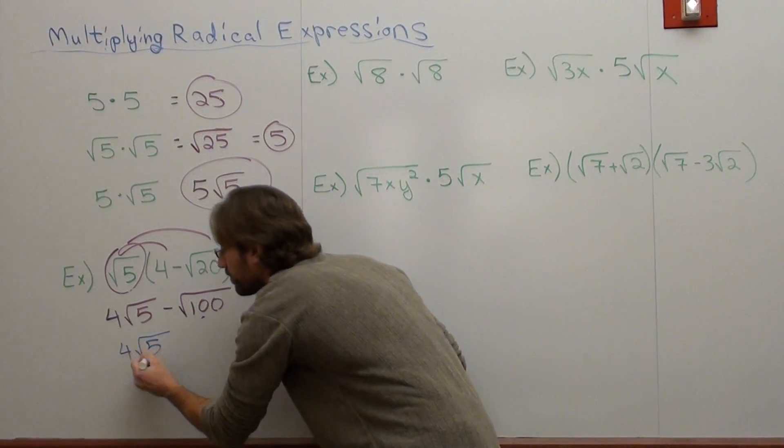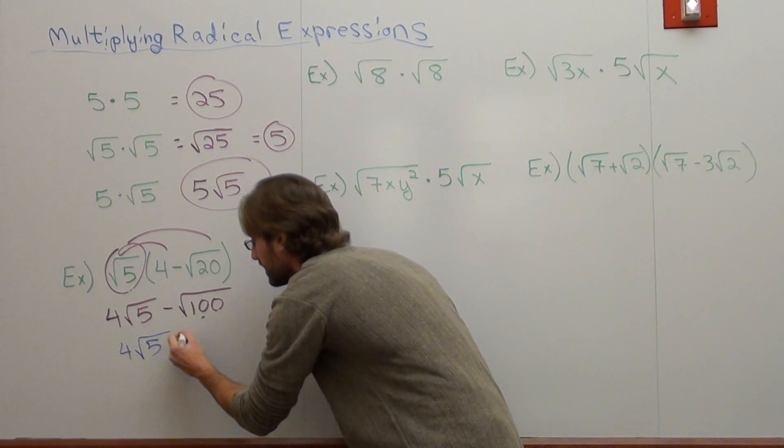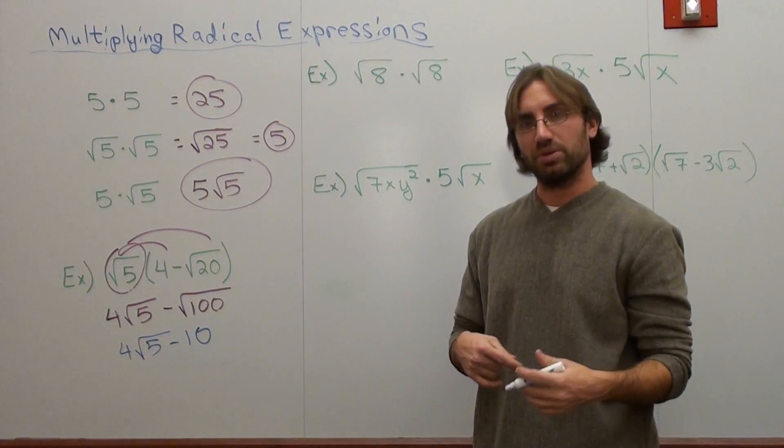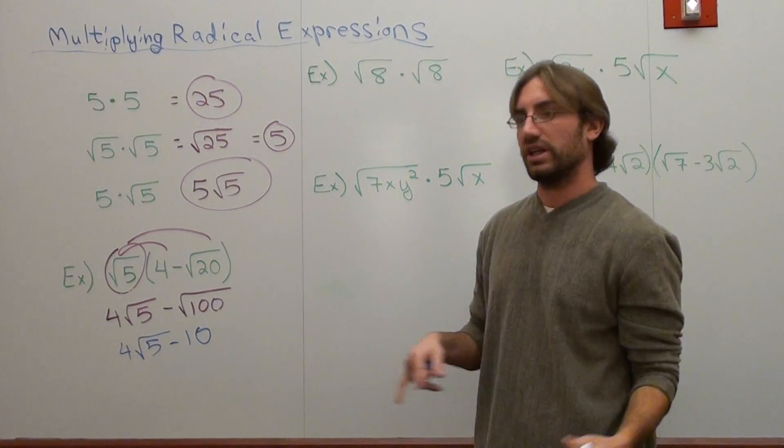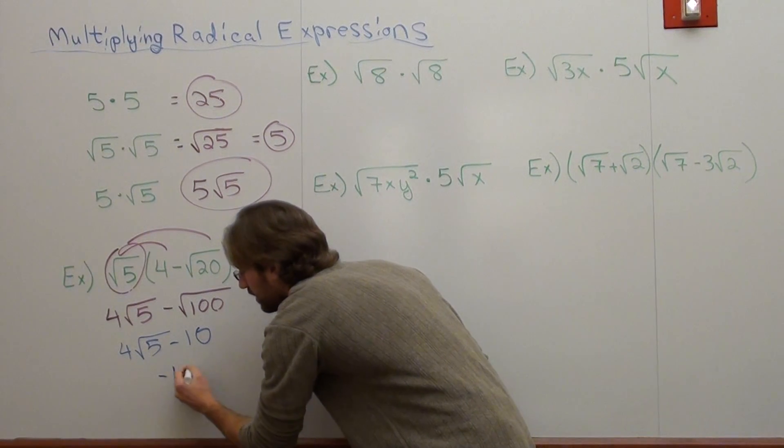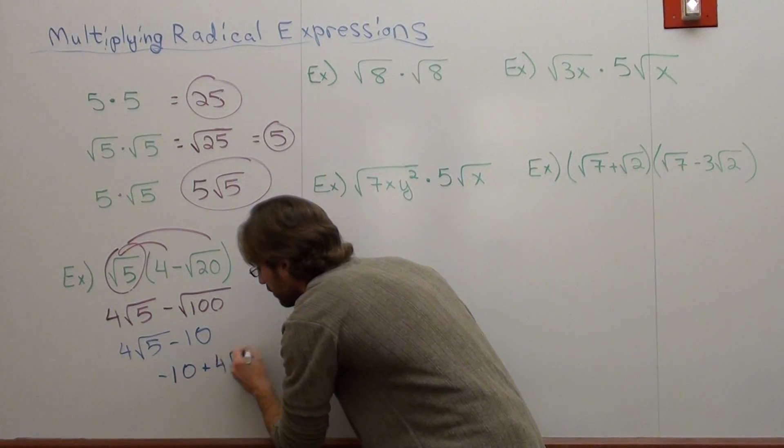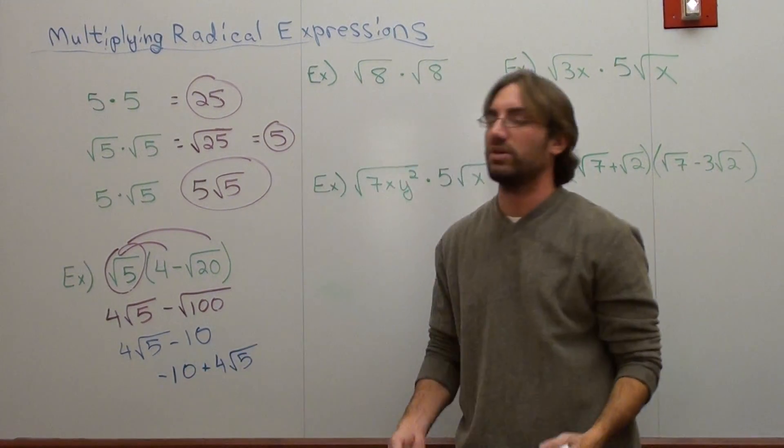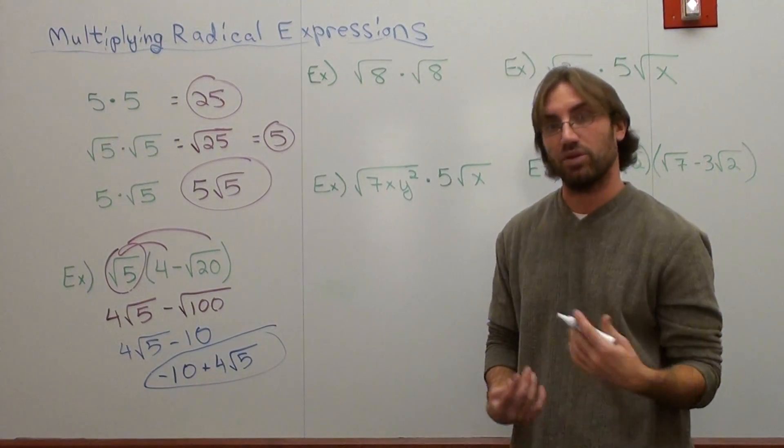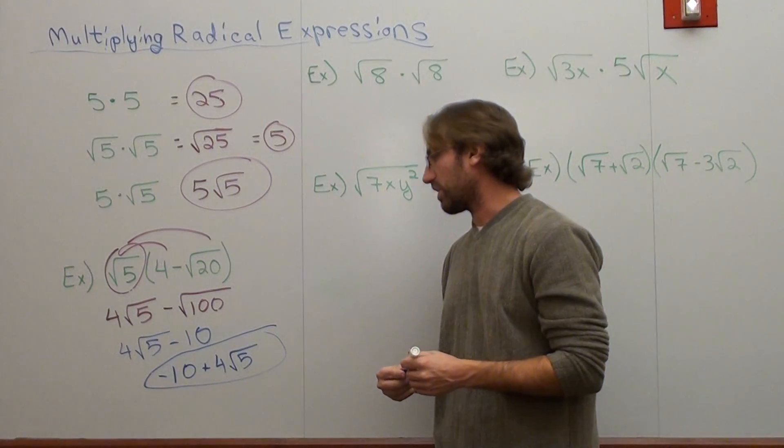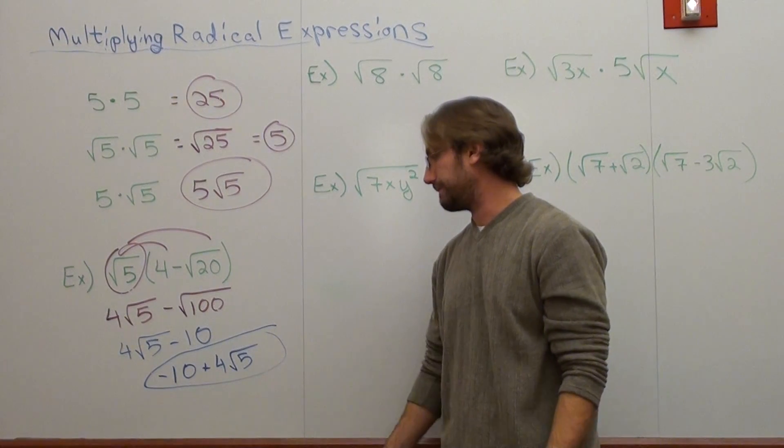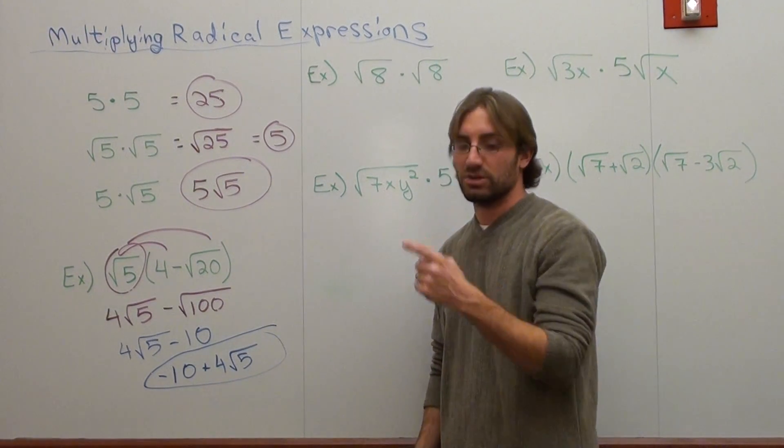So this is 4 square root 5. I'm going to go ahead and erase my work here. I have 4 square root 5 subtract 10. And you're done. But actually, it's more proper for you to put the integer ahead of the number that's being multiplied. So I would put negative 10 plus 4 root 5. It's not proper form, but I wouldn't mark it wrong. But depending if your teacher is very particular, they very well could be. Let's move on.